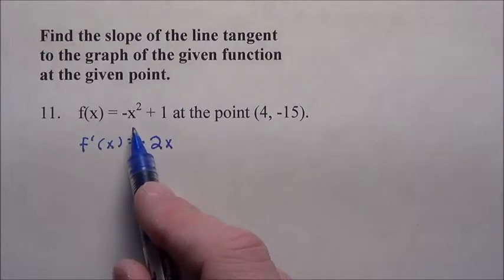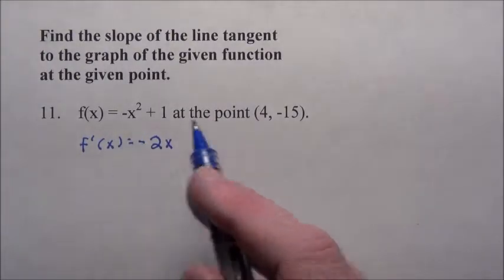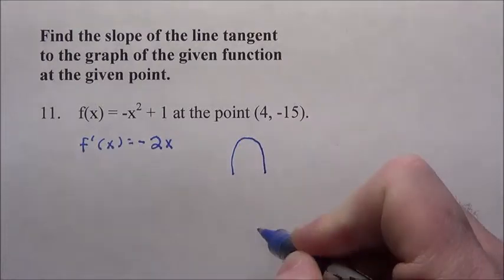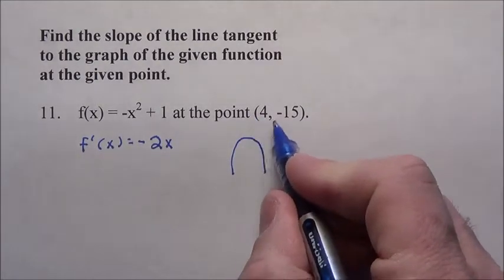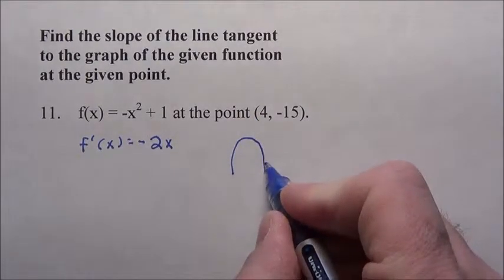So basically if you and I have this graph of -x² + 1, which looks something like, let's say, there, and we're looking for at the point (4, -15), which let's say is right here,